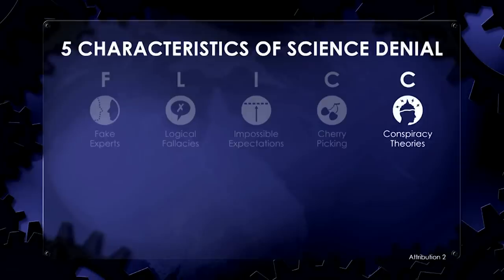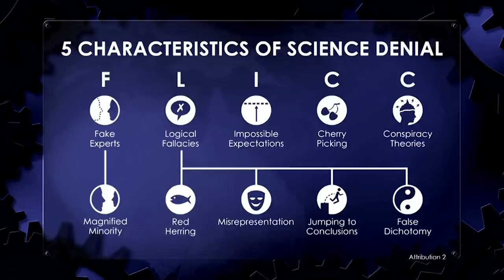How else do you explain nearly every scientist in the world disagreeing with you? There are subcategories of fallacies too. For example, under logical fallacies you find red herrings, which distract people with irrelevant information. Other logical fallacies include misrepresenting or oversimplifying the science, making faulty leaps of logic — called jumping to conclusions — and presenting only two choices when other options are available, which is a false dichotomy. If you successfully explain the fallacy of a myth, you neutralise it. In fact, you can even make it backfire.